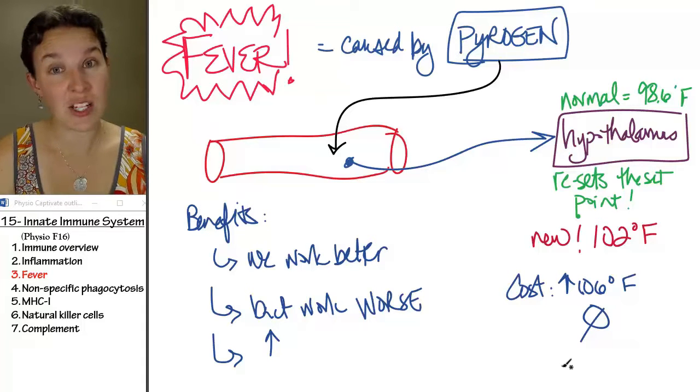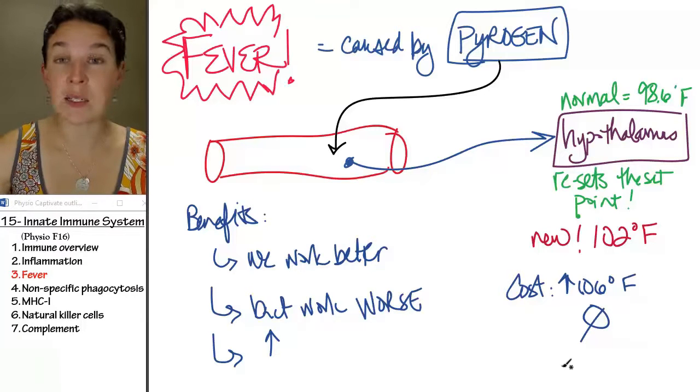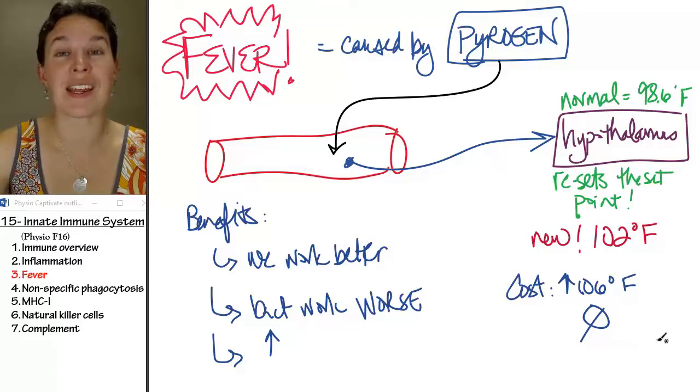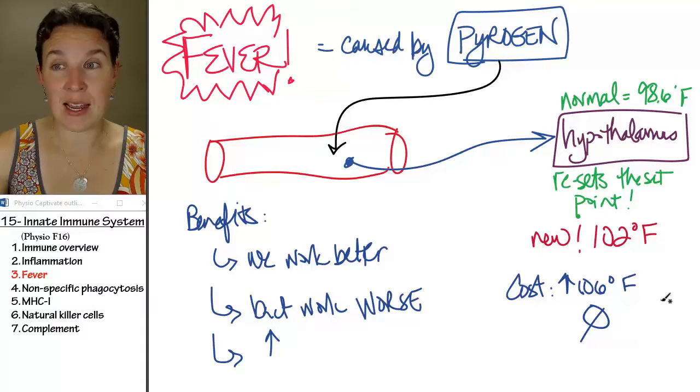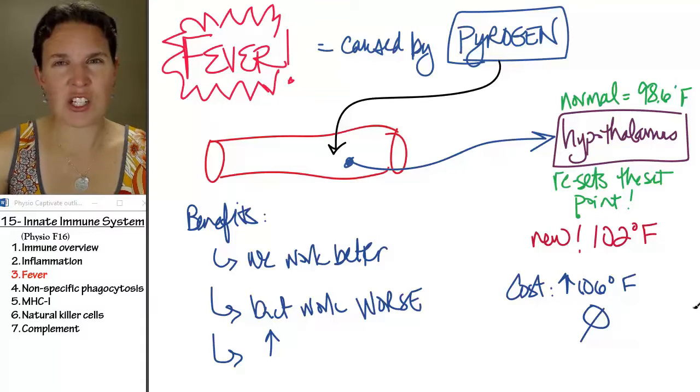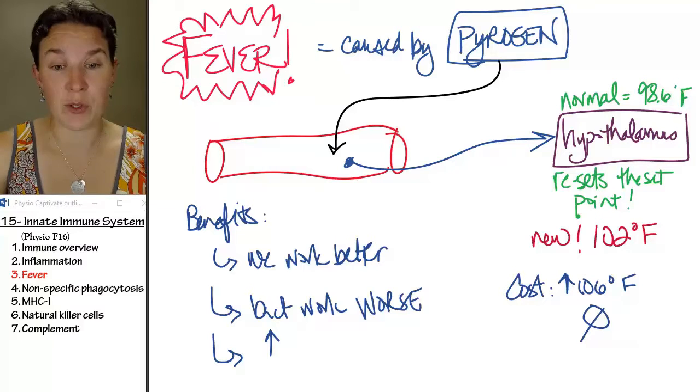Another strategy that the innate immune system employs is nonspecific phagocytosis. So we're going to phagocytize the bad guys, but we're going to do it in a nonspecific way, because phagocytosis is also a part of the acquired immune response.